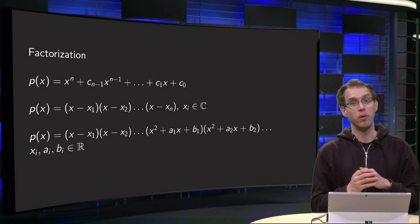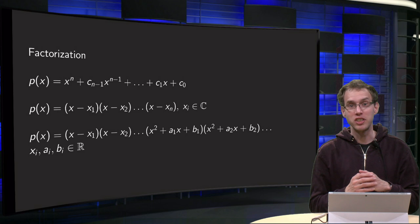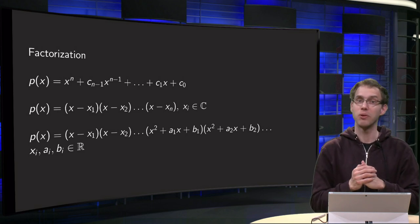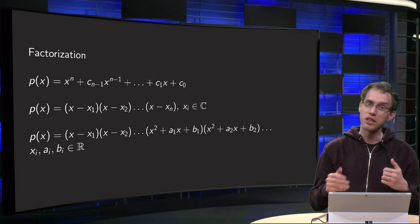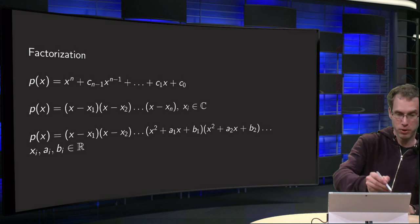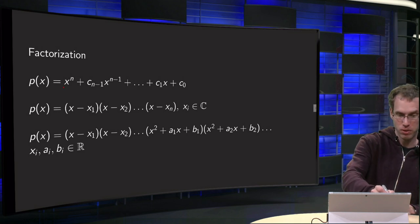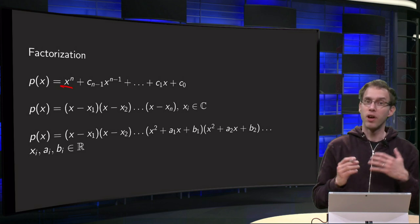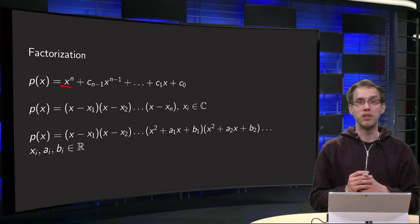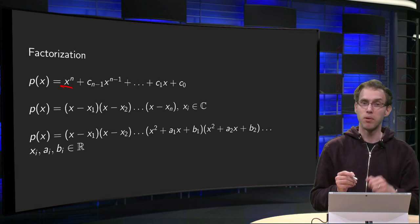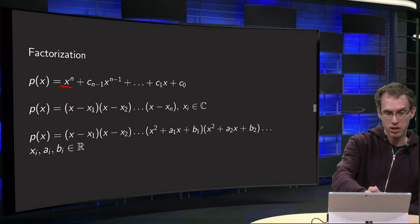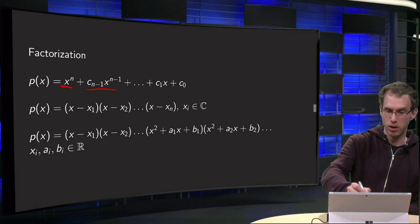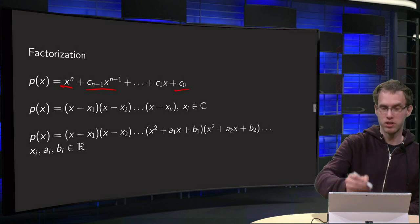In this video we will see what we mean by factorization, why it exists, and which cases we can handle. Let's start with an n-degree polynomial. We start with x to the power n — we can assume without loss of generality that the pre-factor equals 1 — and then some coefficients times x to the power n minus 1, up till c₀.